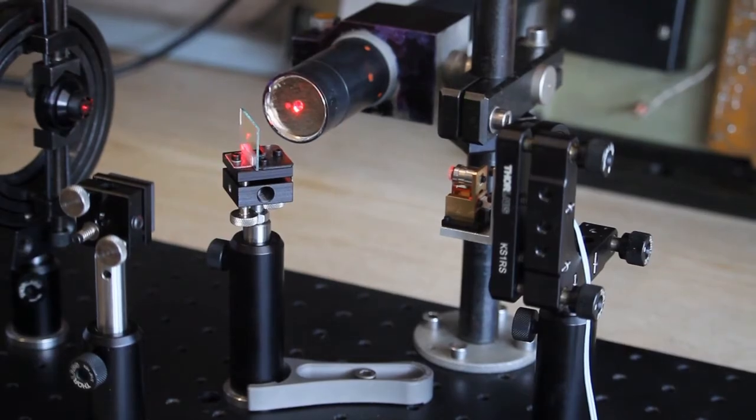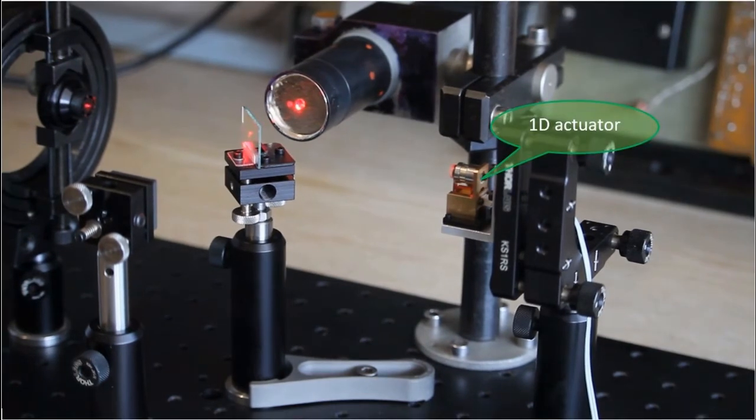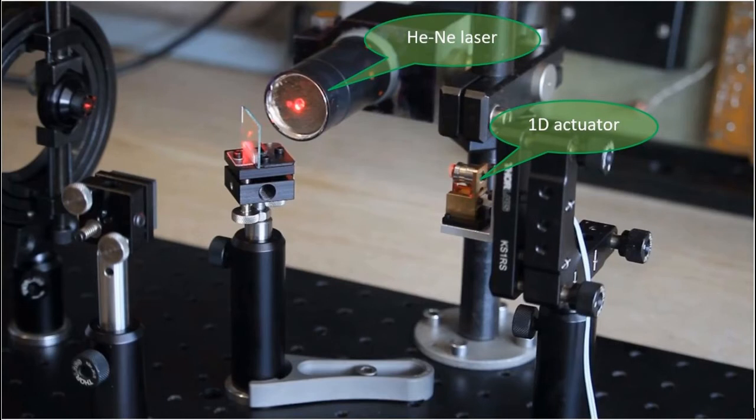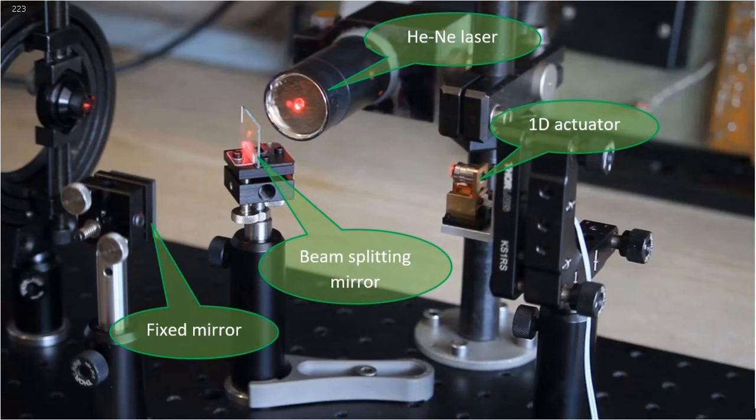The actuator is inserted into the Michelson interferometer and is controlled by a low frequency sinusoidal signal, with a frequency of about 0.4 Hz to be visible in the video.